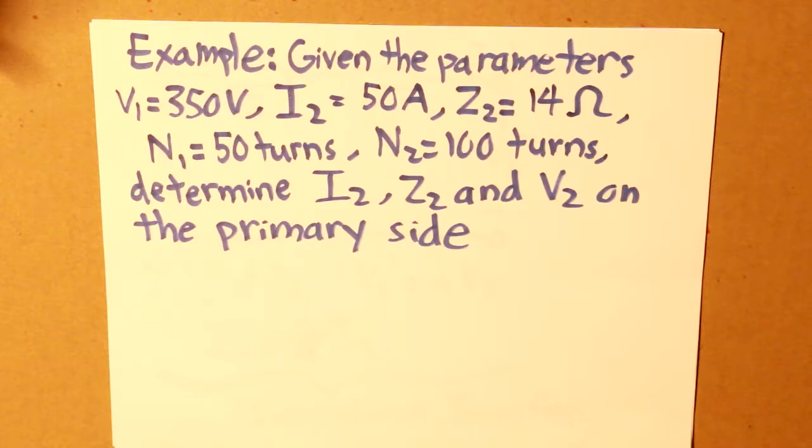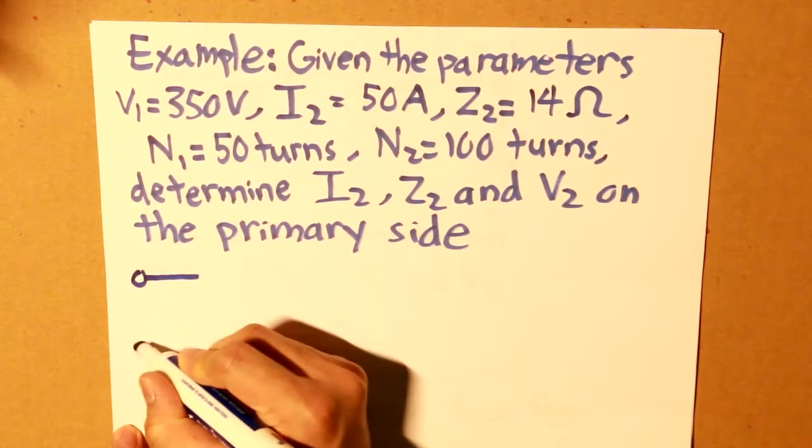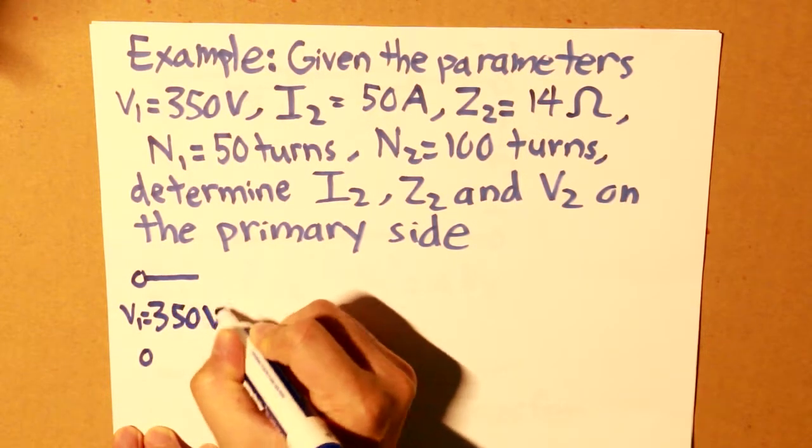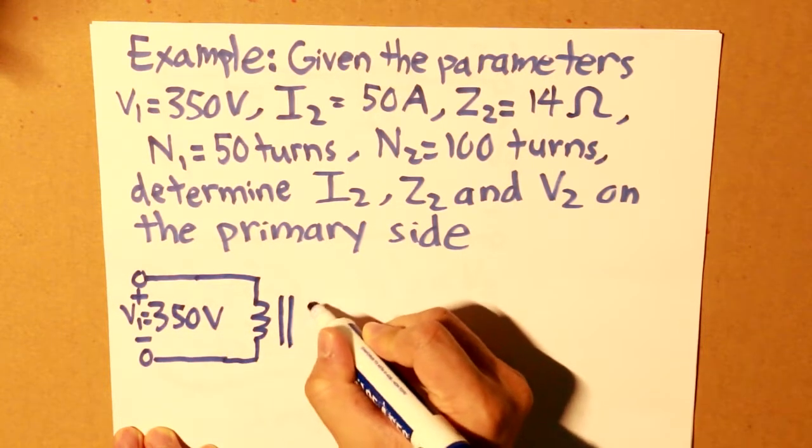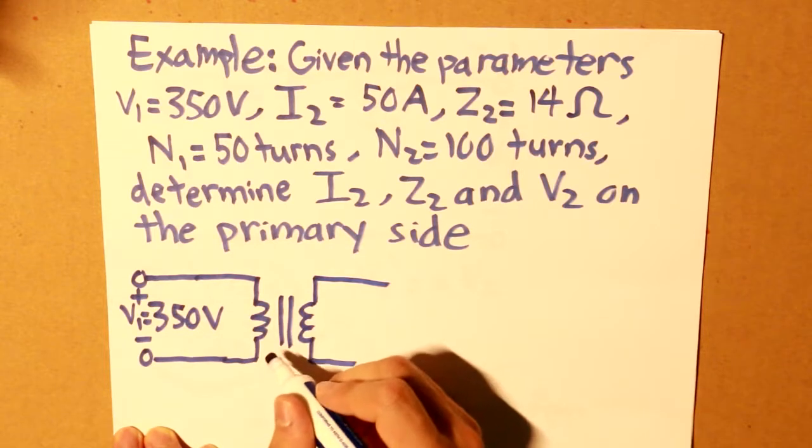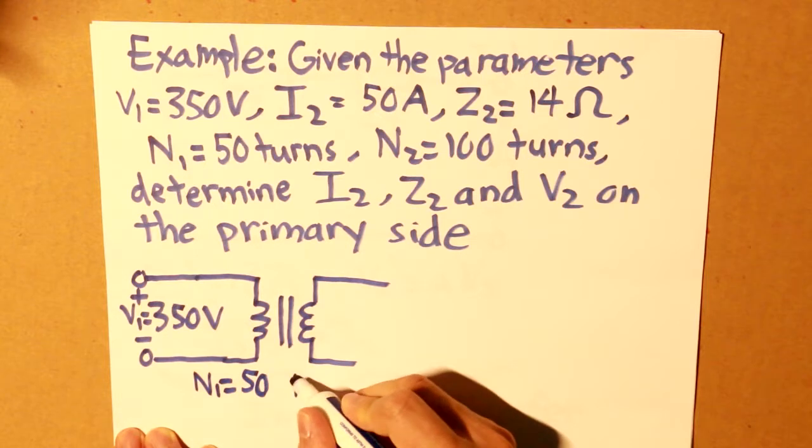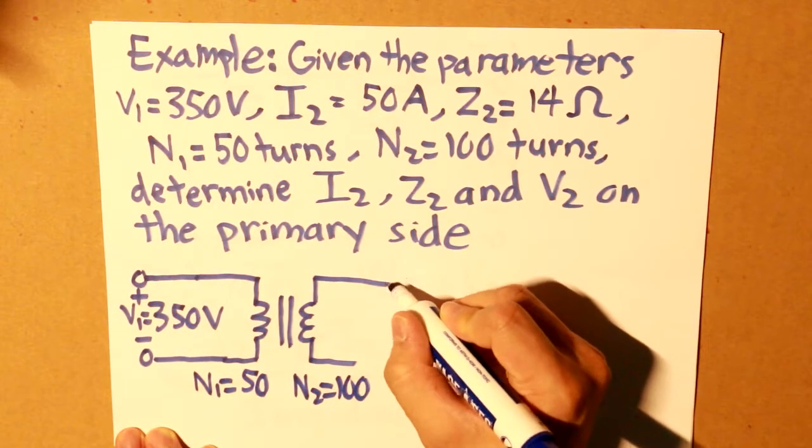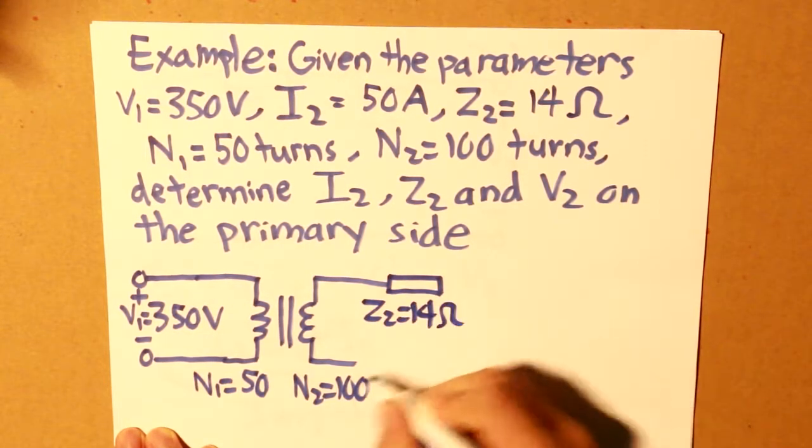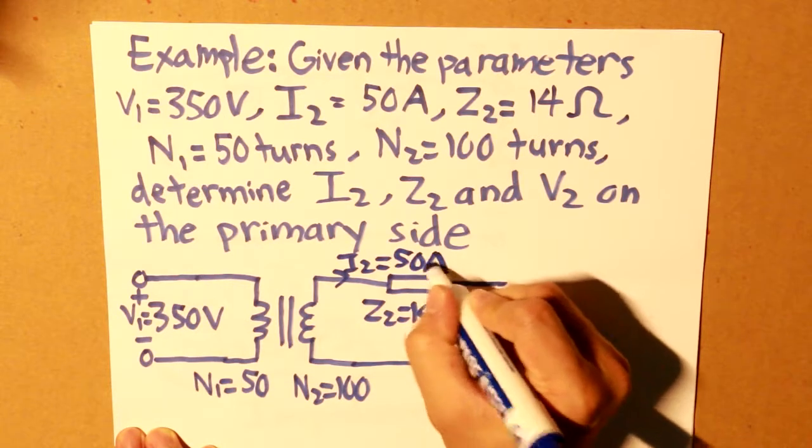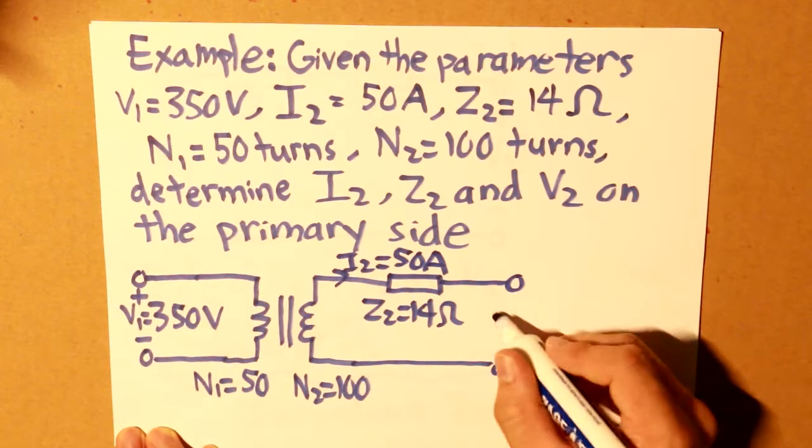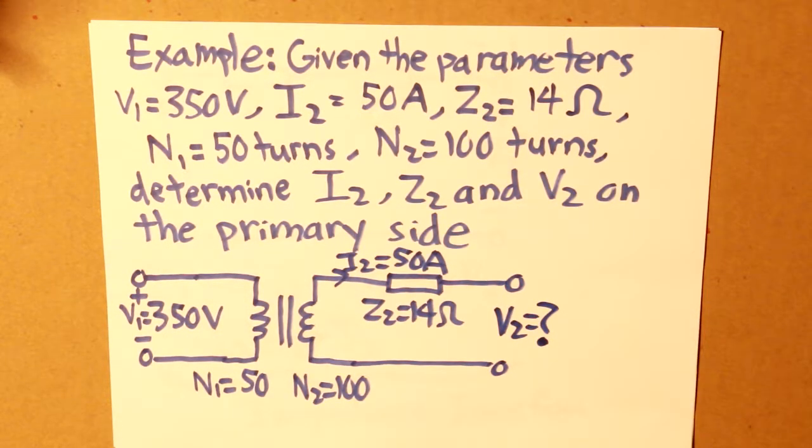So let's utilize impedance transfer, and that's what we're going to have to do. But before that, let's draw our transformer circuit. So first 350 volts, that's our coils. So let's look at the secondary components—n1 is 50, n2 is 100. Z2 is 14 ohms, i2 is 50 amps, and v2 is unknown. So this is how our circuit is.